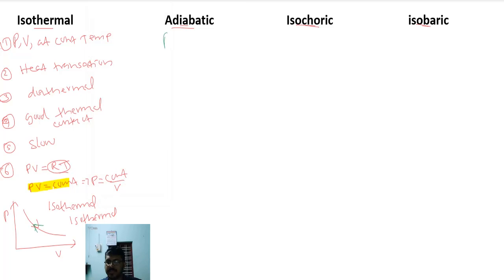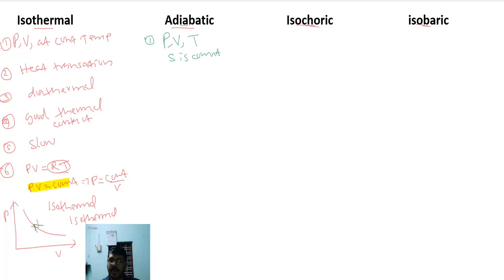Now let us discuss the adiabatic process. In an adiabatic process, pressure, volume, and temperature all change, but the entropy of the system remains constant. So an adiabatic process is also called an isentropic process. There is no heat exchange between the system and the surrounding.